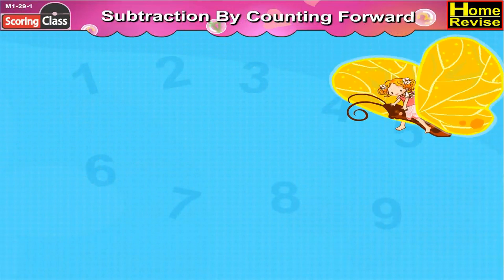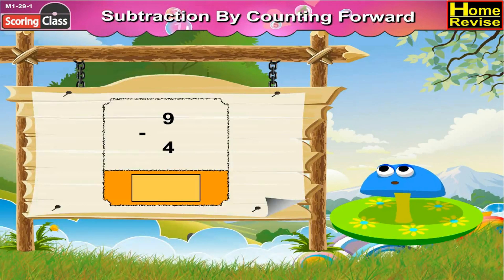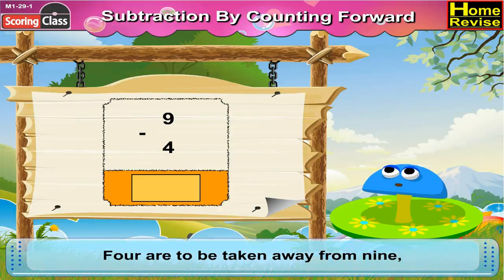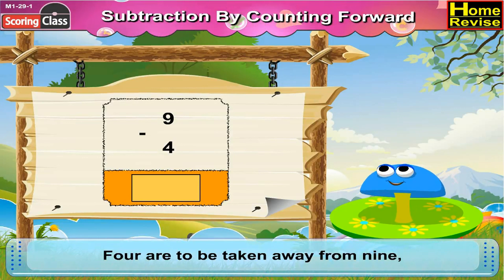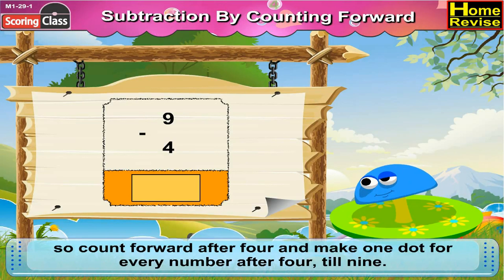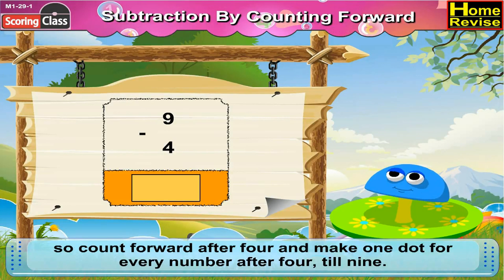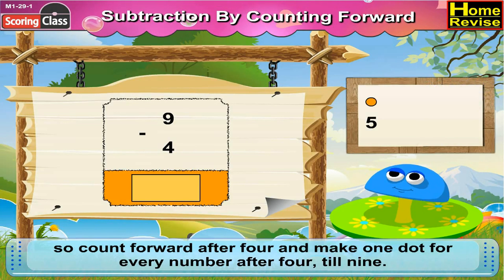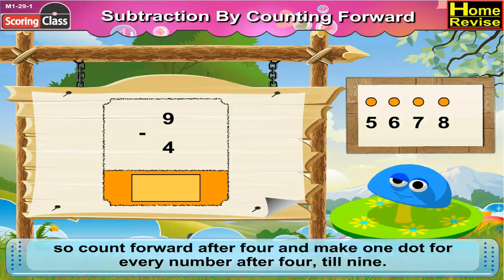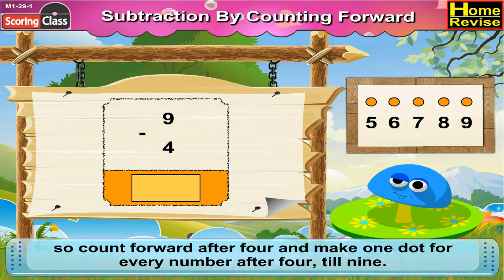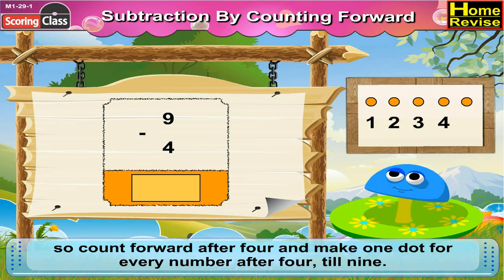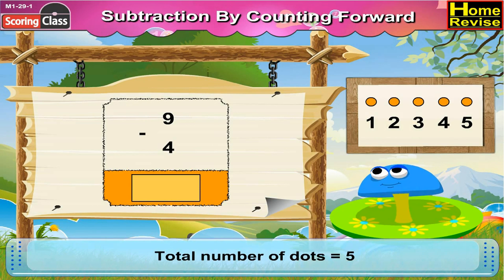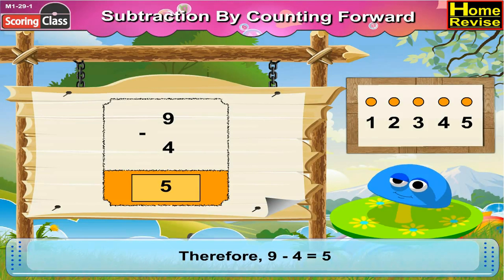Subtraction by counting forward. 9 minus 4 is equal to dash. Now children, 4 are to be taken away from 9. So count forward after 4, and make 1 dot for every number after 4 till 9: 5, 6, 7, 8, 9. Count the dots — 1, 2, 3, 4, 5. Total dots are 5. Therefore 9 minus 4 is equal to 5.